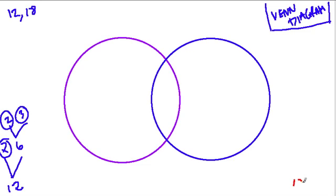And what is 18? Well, that's 9 times 2. 2 is prime, and 9 is just 3 times 3.